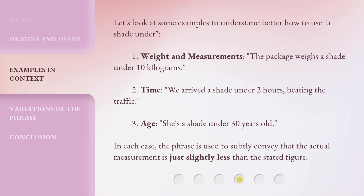Let's look at some examples to understand better how to use 'a shade under.' 1. Weight and measurements: 'The package weighs a shade under 10 kilograms.' 2. Time: 'We arrived a shade under 2 hours, beating the traffic.' 3. Age: 'She's a shade under 30 years old.' In each case, the phrase is used to subtly convey that the actual measurement is just slightly less than the stated figure.